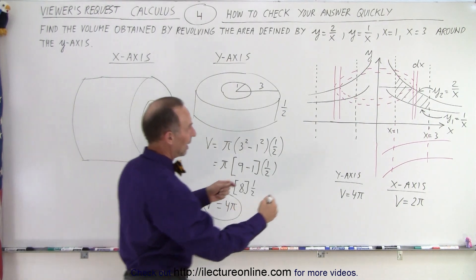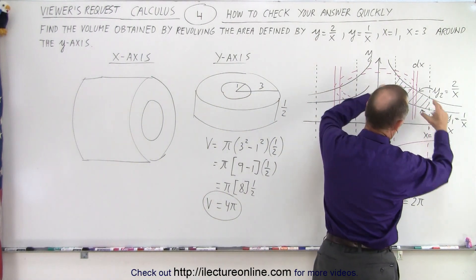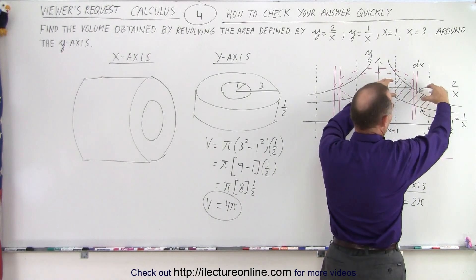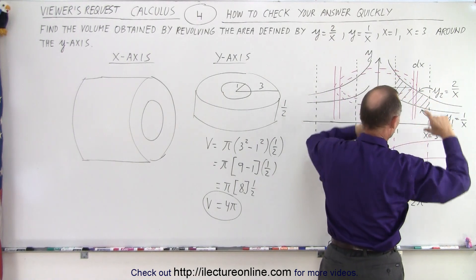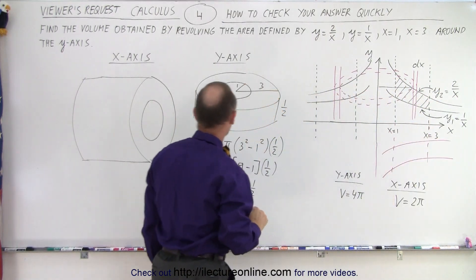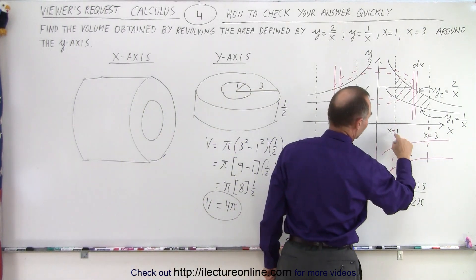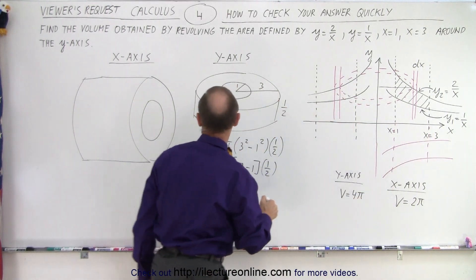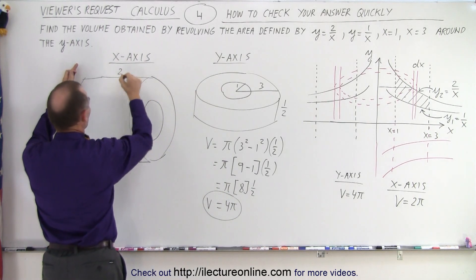Now, what happens is we take this thing that looks curved and we flatten it out and we revolve it around the x-axis like this. So the length is the easiest part. The length goes from x equals 1 to x equals 3. So the length from there to there is equal to 2.